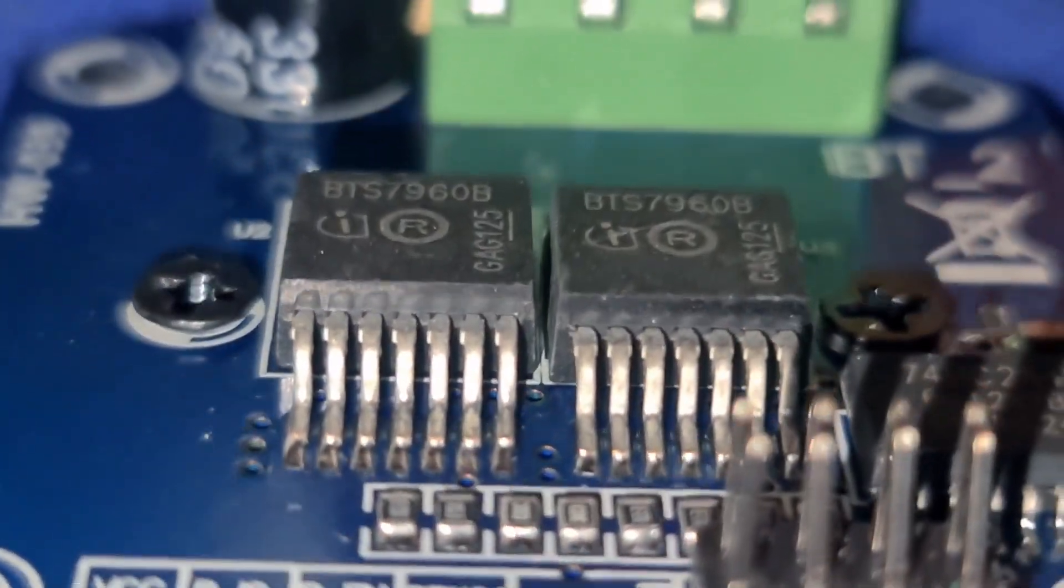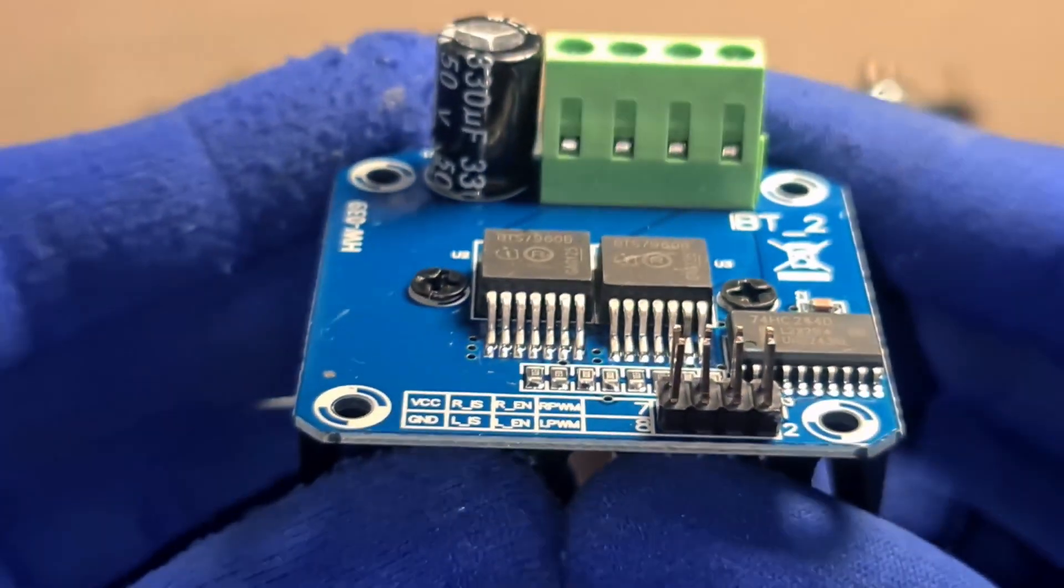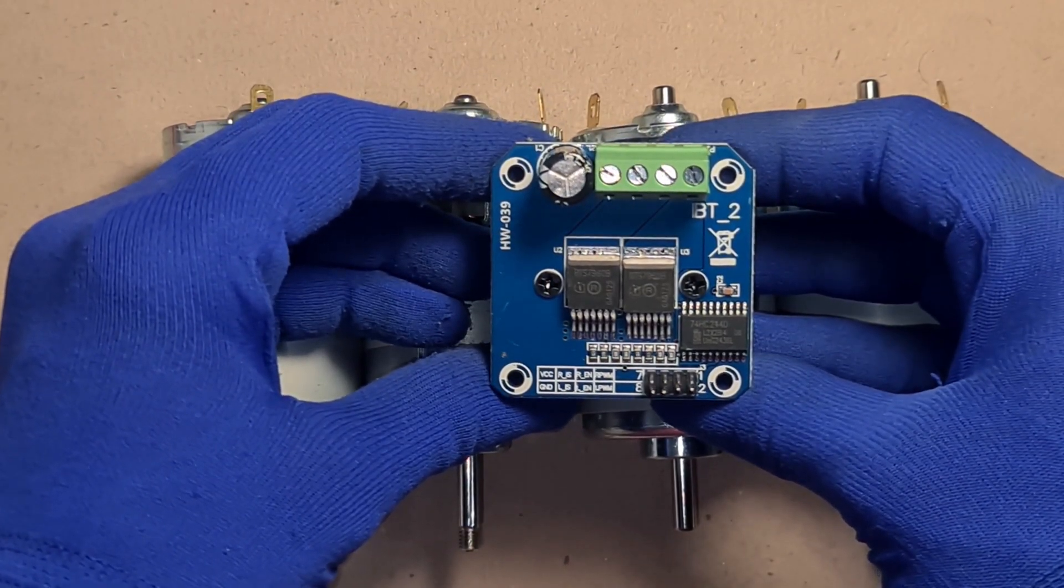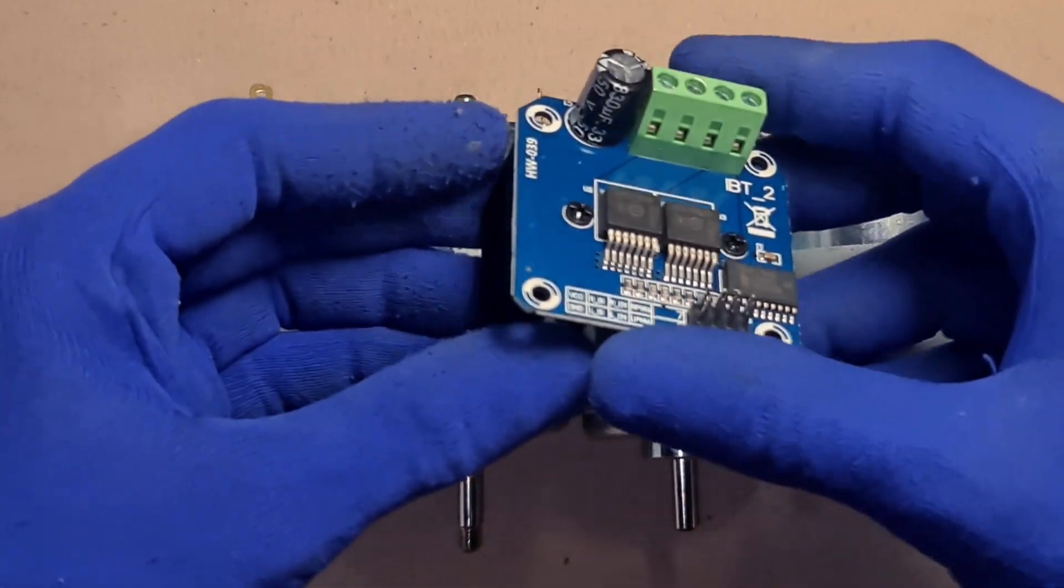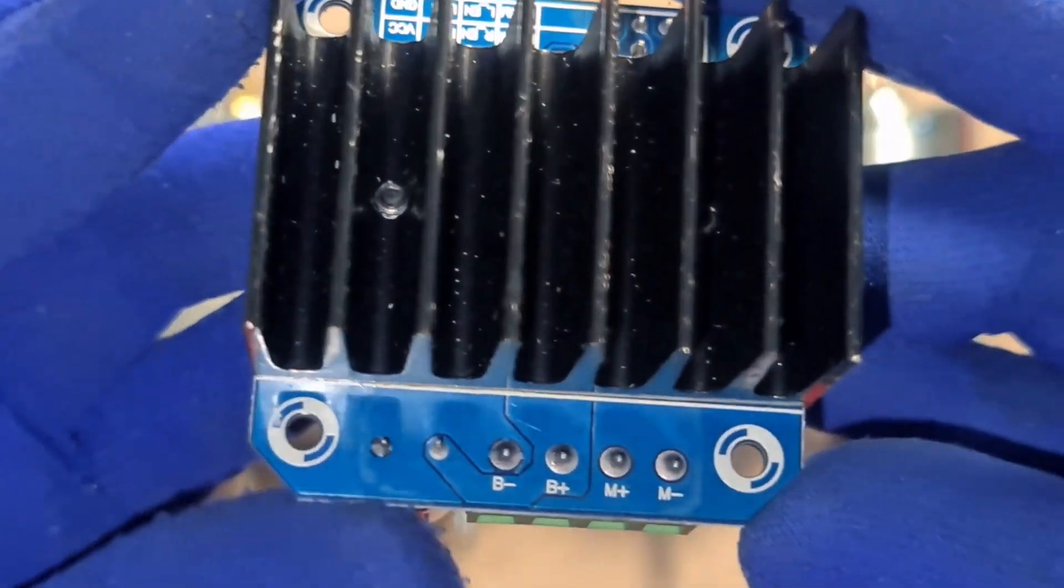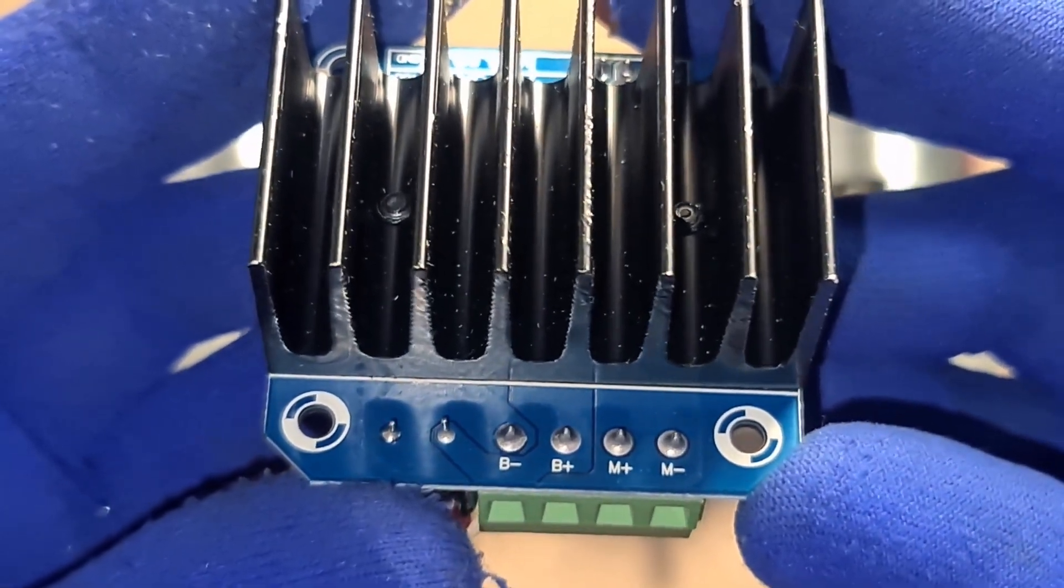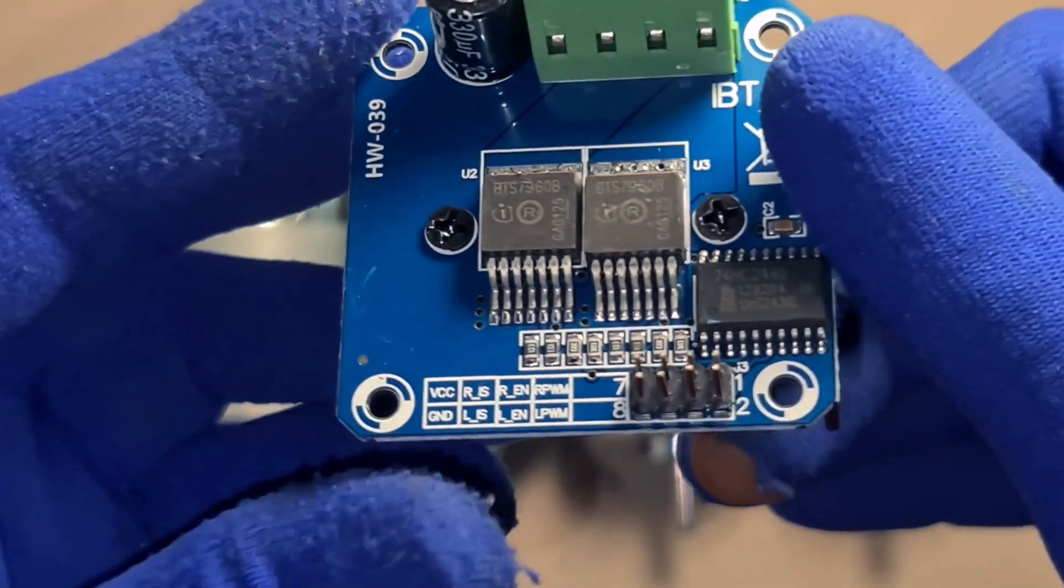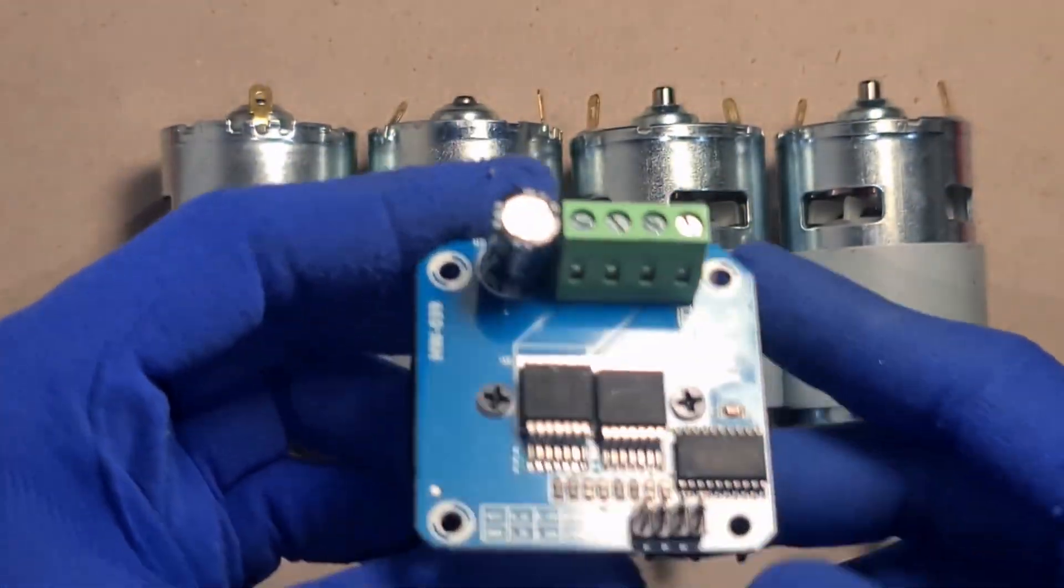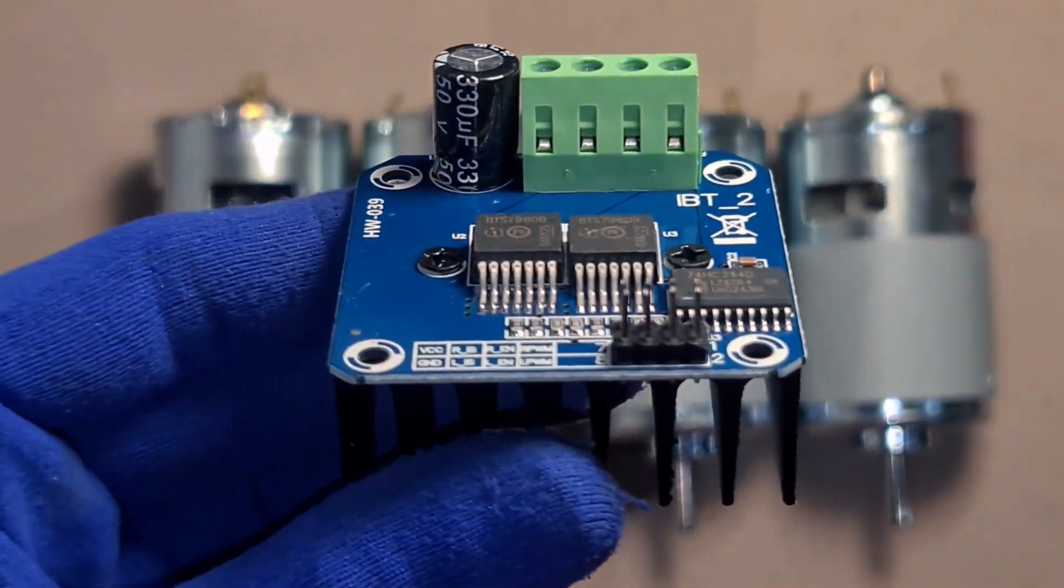Now meet the power behind today's test. The BTS 7960B 43A motor driver, also known as MD0012. It's a serious upgrade from budget drivers like L298N, built for big motors like the 775. Features: supports 43A continuous with heat sinking, can handle up to 24 volts easily, dual BTS 7960 chips equals full H-bridge, controlled via PWM plus direction pins, perfect for high load applications like DIY tools, robots, and CNCs.